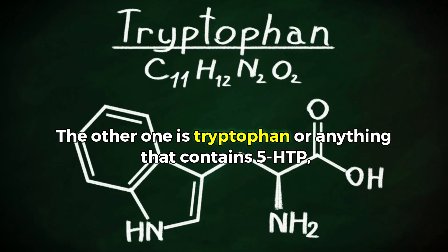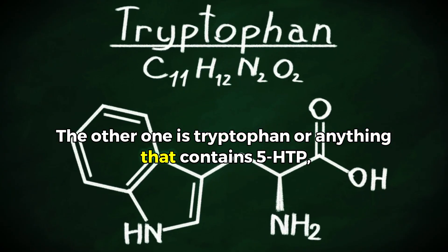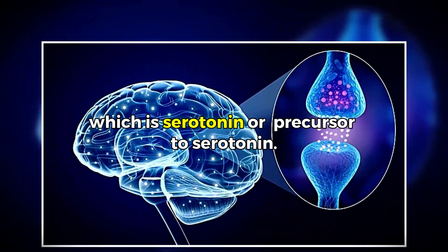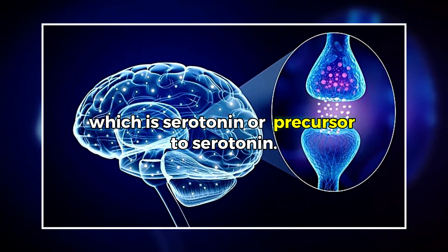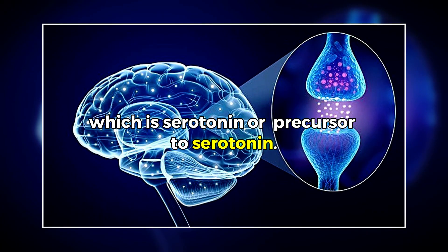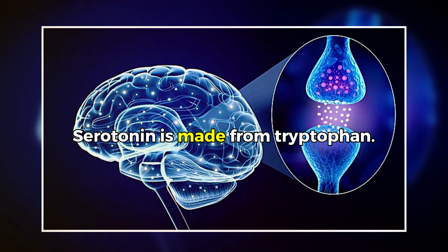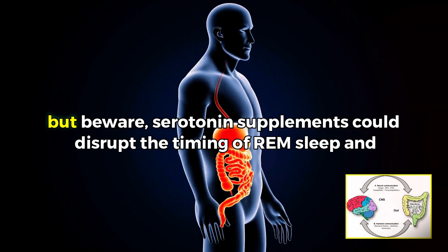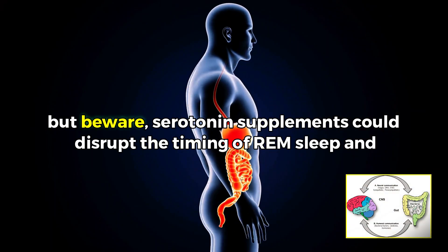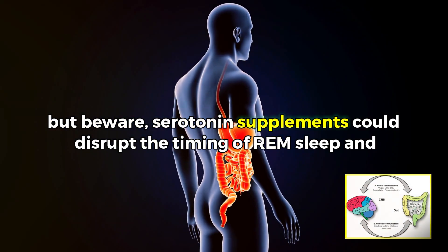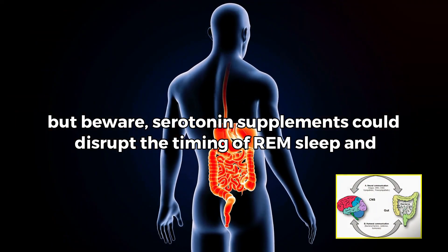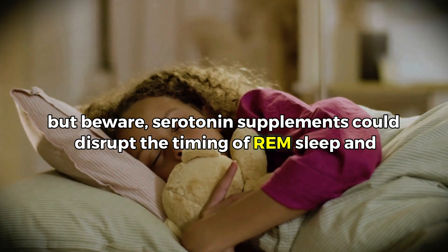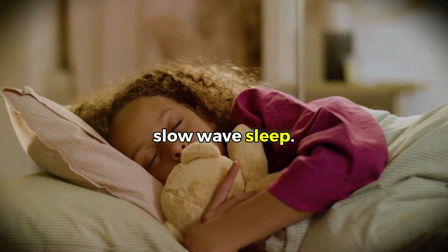Another disruptor is tryptophan or anything that contains 5-HTP, which is serotonin or a precursor to serotonin — serotonin is made from tryptophan. For some people those supplements might work, but beware: serotonin supplements could disrupt the timing of REM sleep and slow-wave sleep.